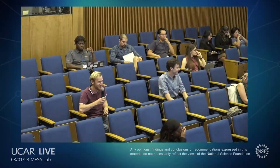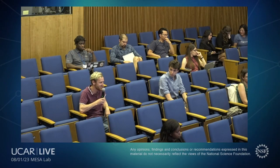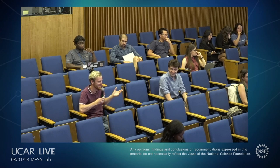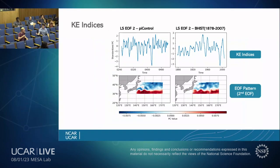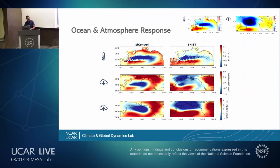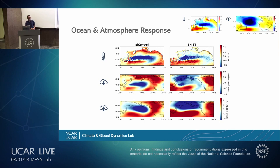Question from audience: Have you looked at the differences between the PI control and the historical run? They look a bit different, and the CO2 forcing is not that strong in the historical run yet. Nish's response: This is still ongoing work and I haven't fully looked into it. But I agree there are differences. One thing we are trying to analyze is taking the PI control and historic piecewise — for example, instead of looking at all 400 years of PI control, taking 50 or 100-year chunks to see whether there is a phase where the signal weakens or strengthens. We can do the same thing with the historic run, but we haven't done that yet.